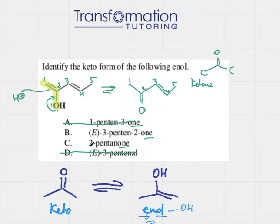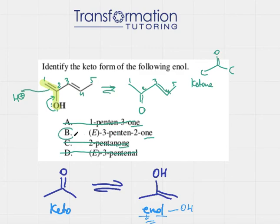So I have either 2-pentone or E-3-penten-2-one. Since we see that there is another double bond here that we have to account for, it cannot be 2-pentone — that would just be a pentane chain with a double bond O on the second carbon, with no other double bond. So our answer is E-3-penten-2-one, which tells us that on the third carbon we have a double bond (penten), and on the second carbon we have a double bond O.